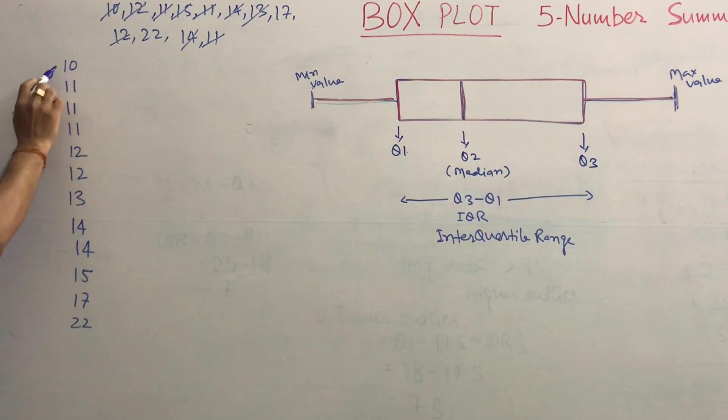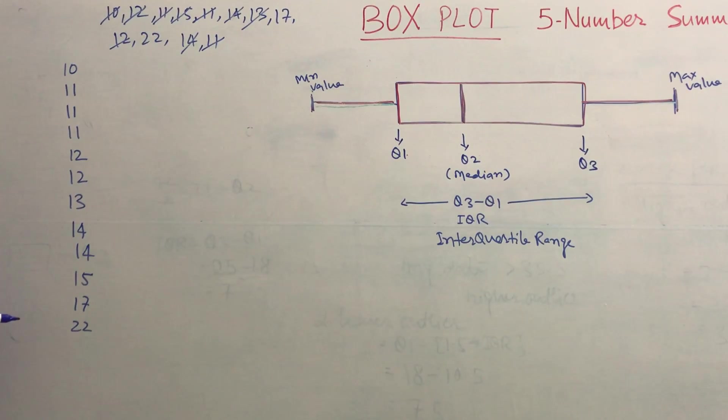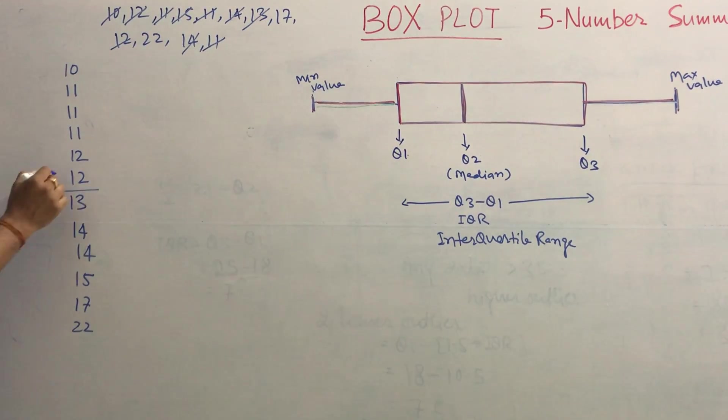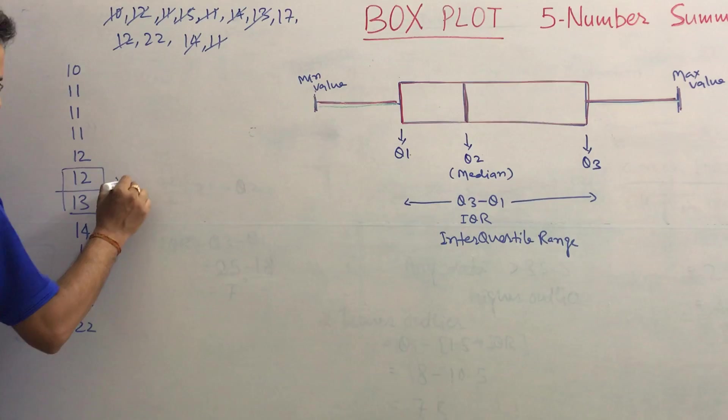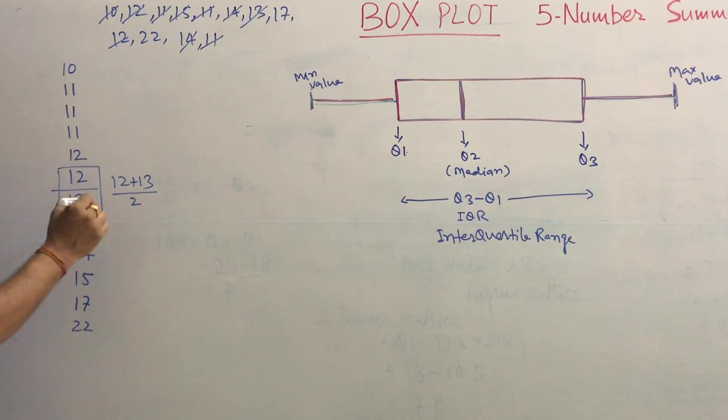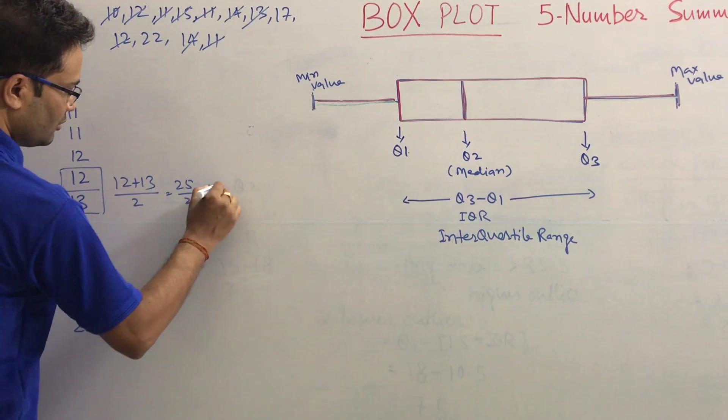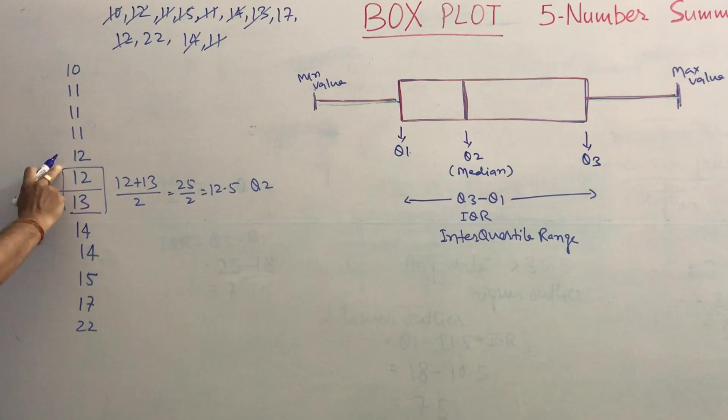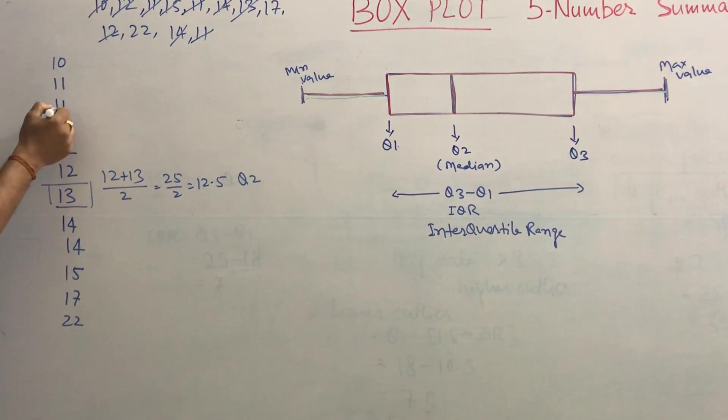Then we have 14, another 14, then 15, then 17, and 22. How many data do we have? 1, 2, 3, 4, 5, 6, 7, 8, 9, 10, 11, 12. So this is the median data. How to get the median? 12 plus 13 divided by 2, so it becomes 25 by 2, which is 12.5. This is your Q2, the median.